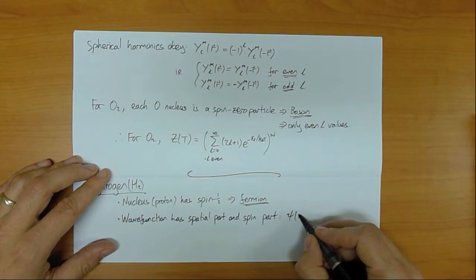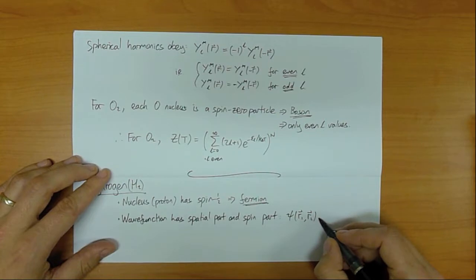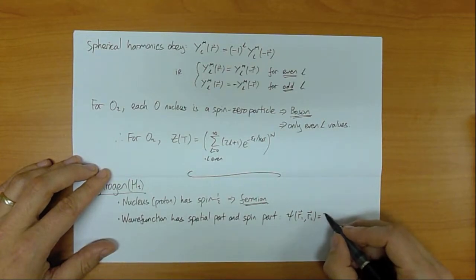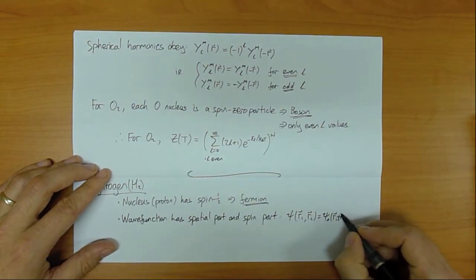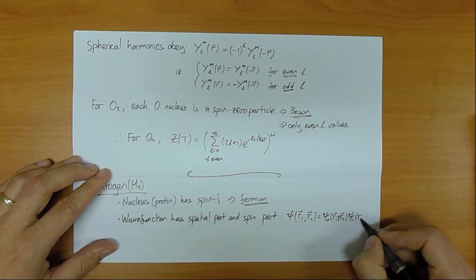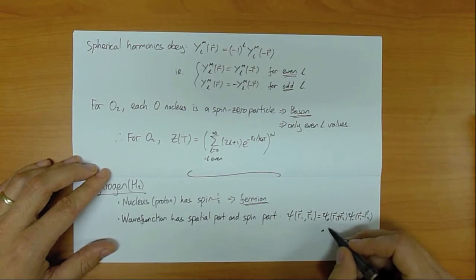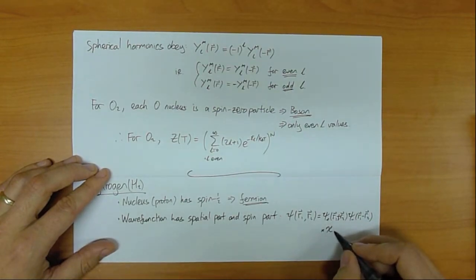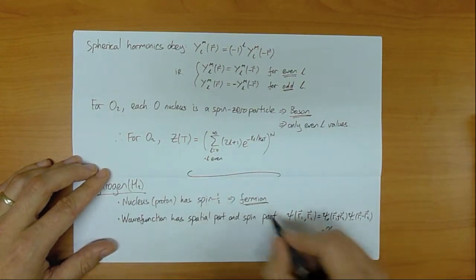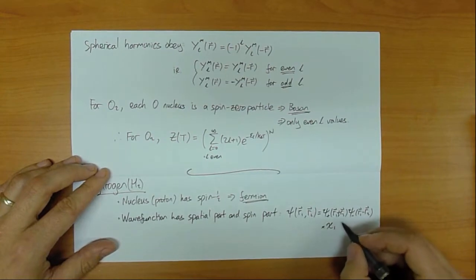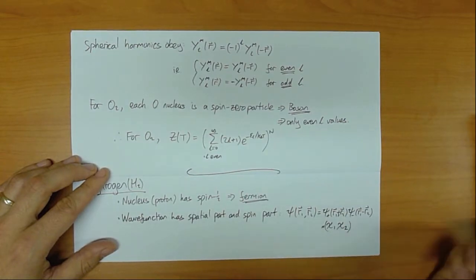Now each nucleus will have a spatial part of the wave function and a spin part. So I can write the whole wave function psi(R1, R2) as a spatial part — which as before we write as psi_plus(R1+R2) times psi_minus(R1−R2) — multiplied by a spin part, which I can write as psi_1 (a two-component vector for the first spin-1/2 particle) and psi_2 for the second particle.